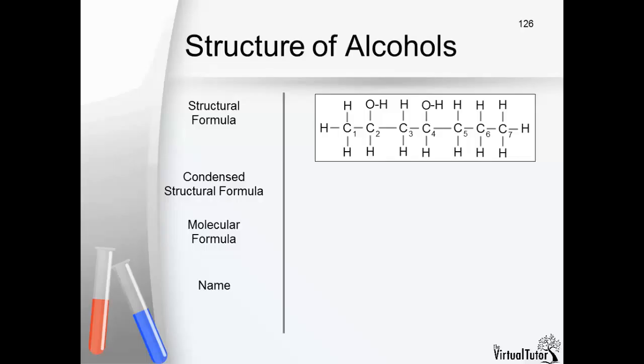This alcohol has two hydroxyl groups. We must number the chain so that both hydroxyl groups have the lowest possible number.